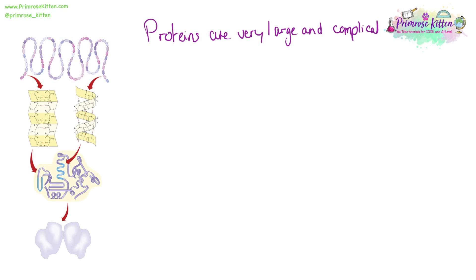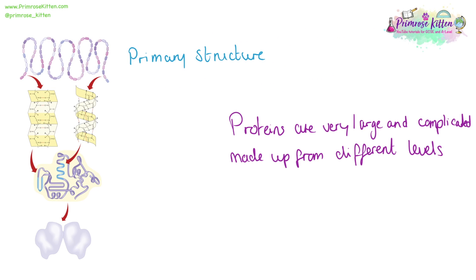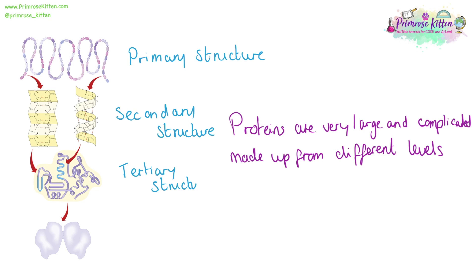Proteins are very large and complicated molecules. They have lots of different levels in them, starting with the primary structure, moving through to the secondary structure, which gets a little bit more complicated. Then the tertiary structure sees things get more complicated, but still within a single chain. And then finally, the quaternary structure. We're going to go through each of these in parts.